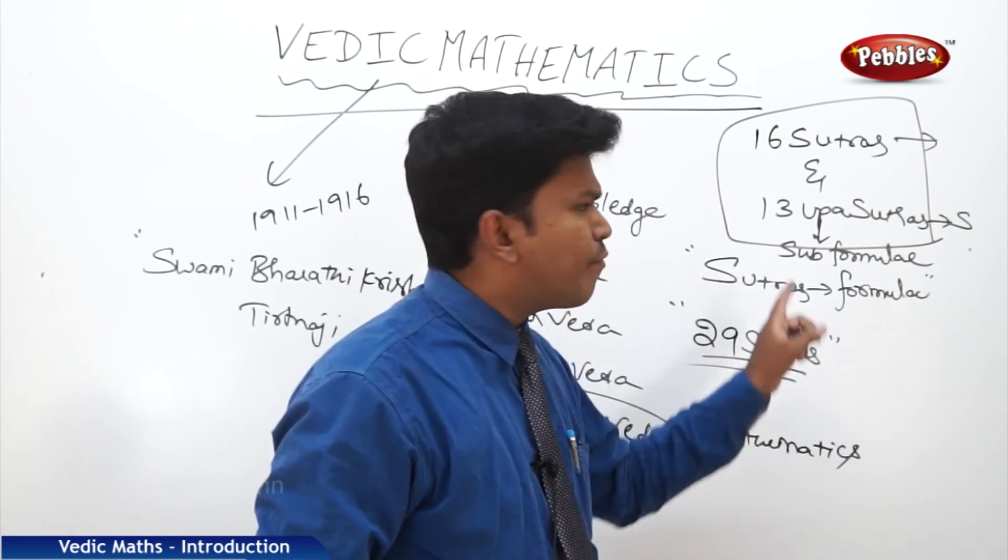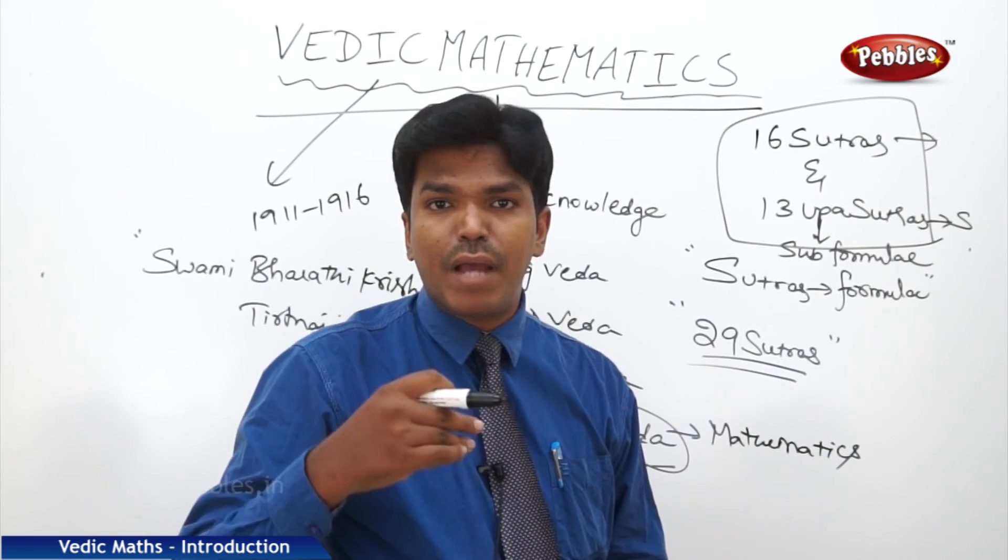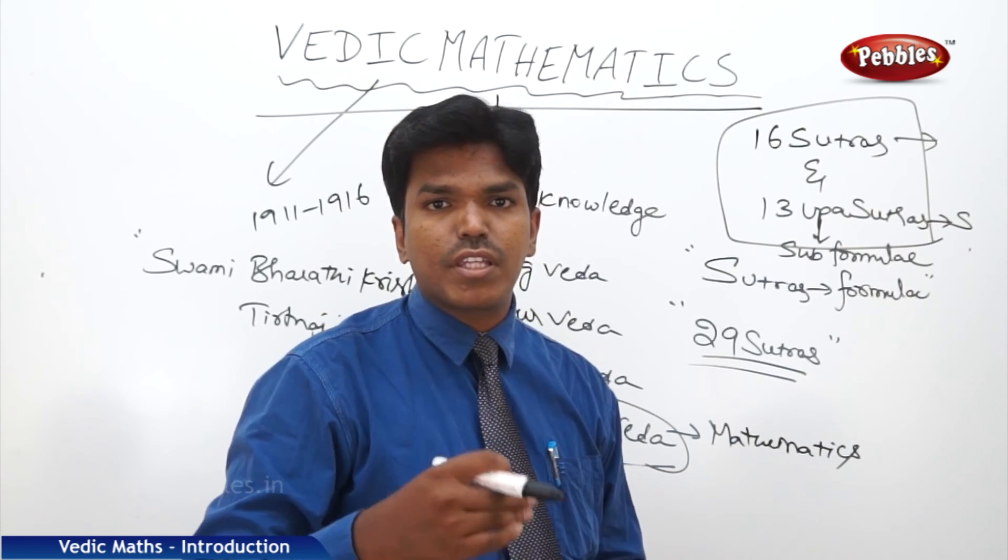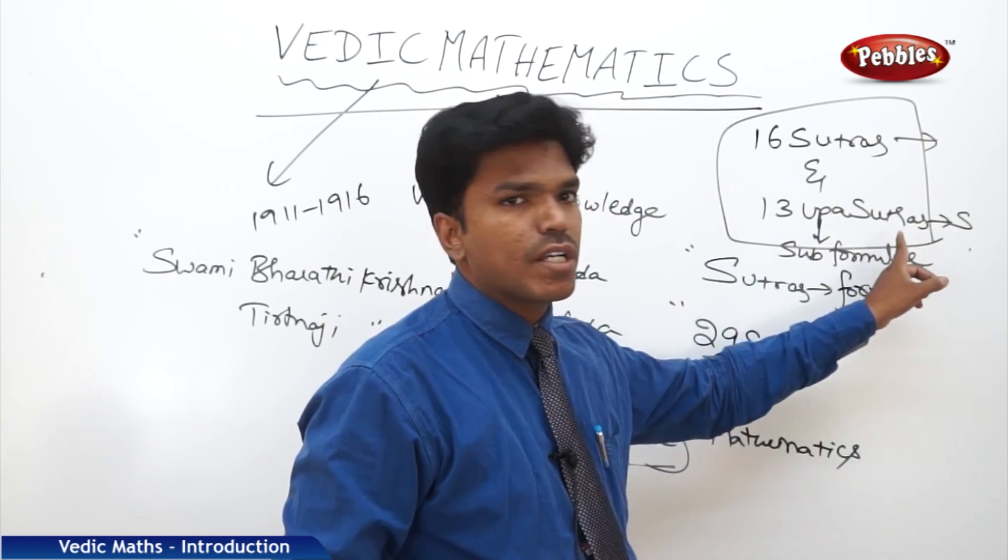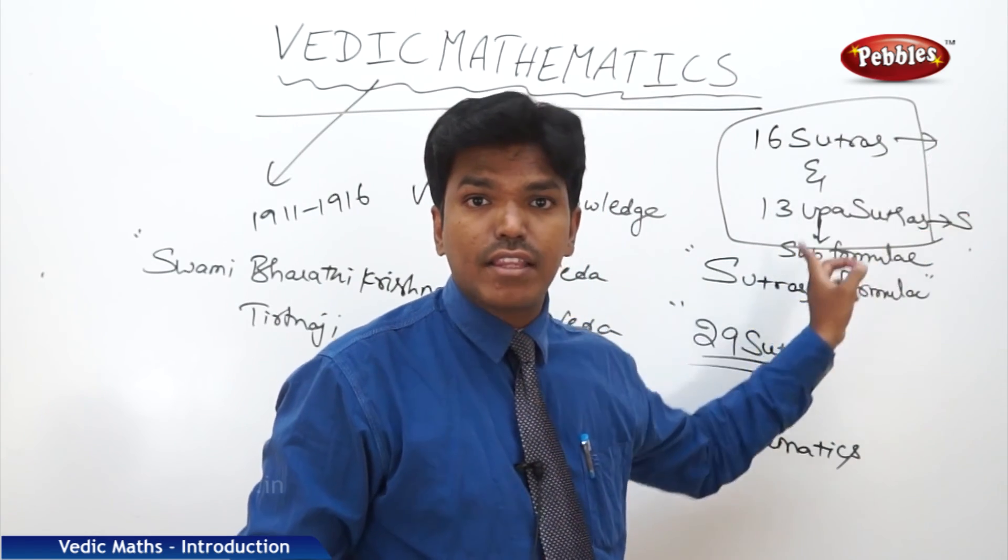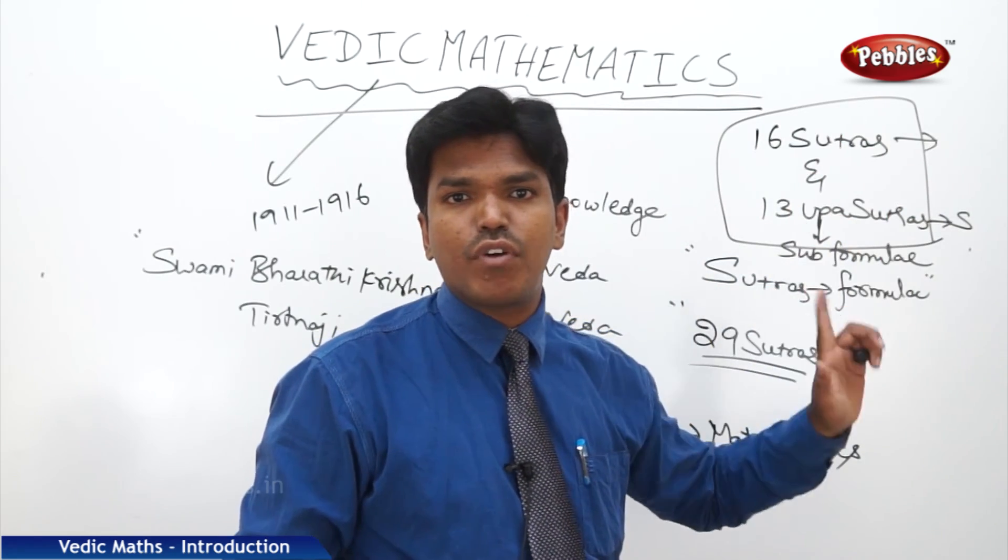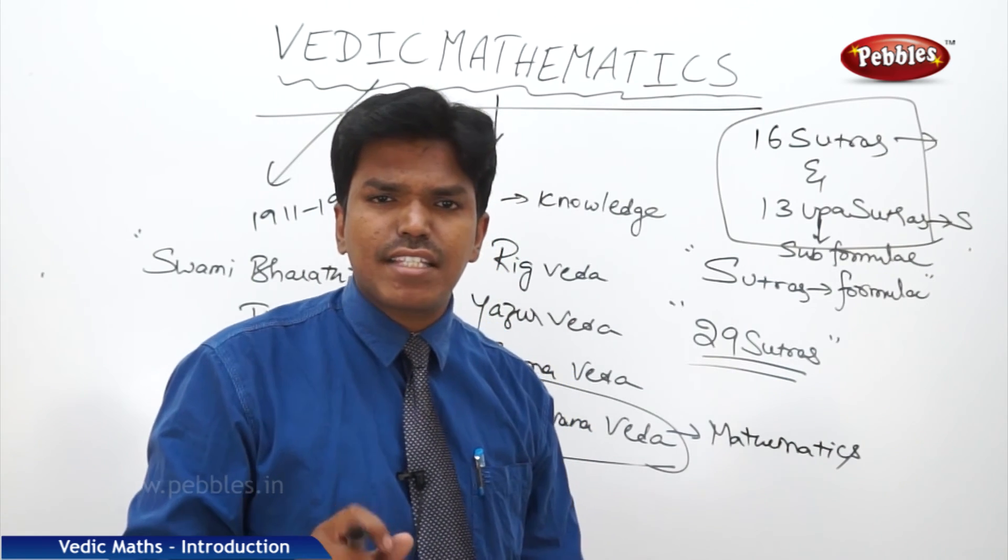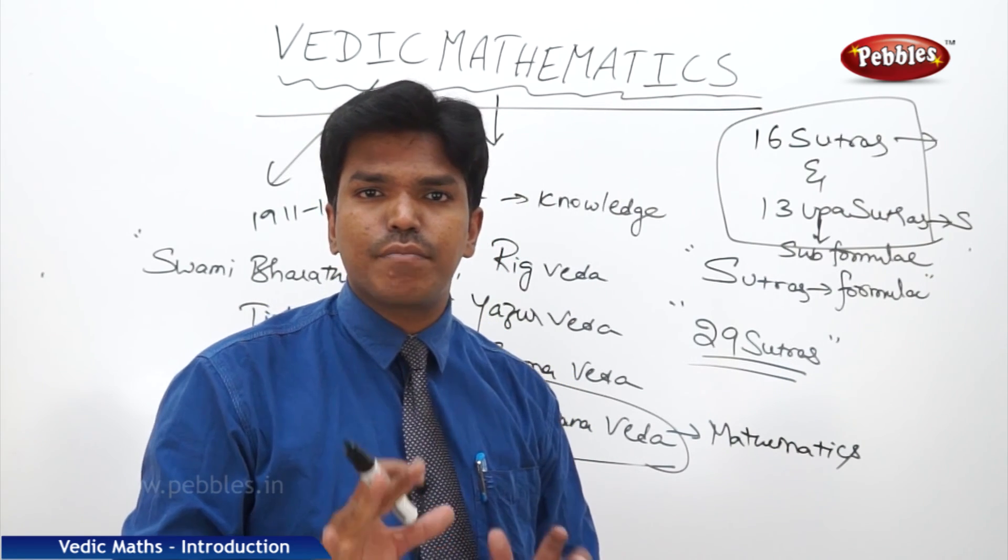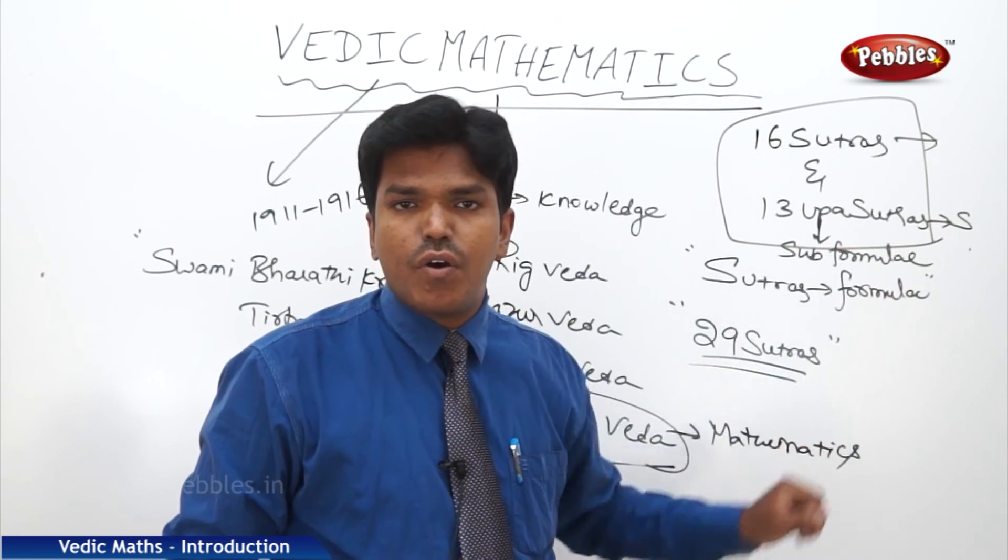Similarly, we have 16 sutras and 13 upasutras, that means 16 formulae and 13 subformulae or corollary. In total, we have 29 formulae. With the help of these 29 formulas, we are going to do the maths easier, faster, and simpler.